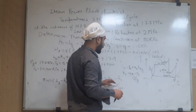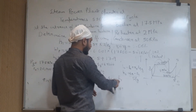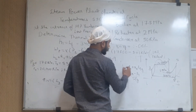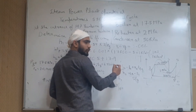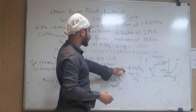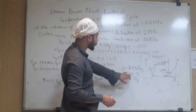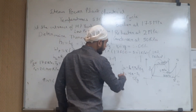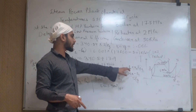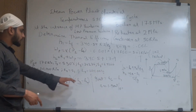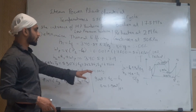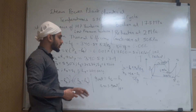For process 6 to 1, heat is coming out, so Q_out = H6 − H1. H6 is found using H6 = Hf + x6 × Hfg, where x6 is the quality at point 6 computed as x6 = (S6 − Sf) / Sfg. Once we find the quality, we substitute to get H6, then compute Q_out = H6 − H1.